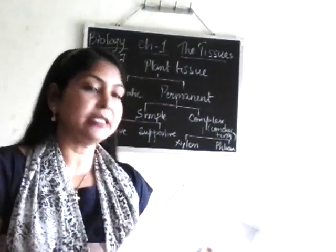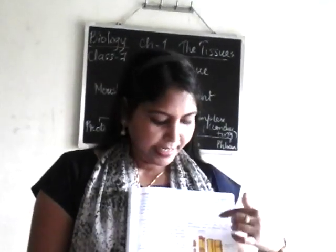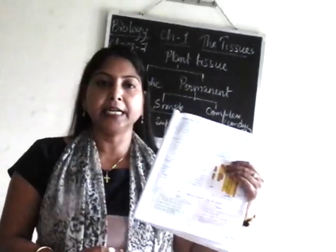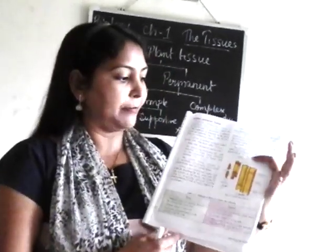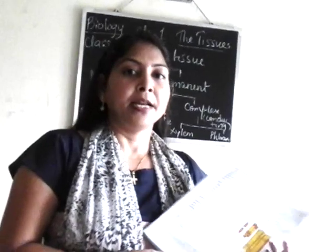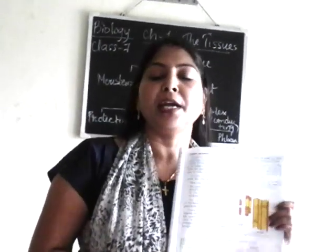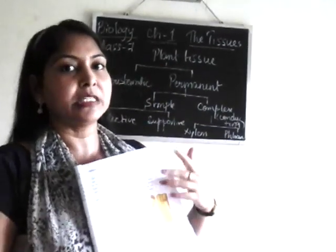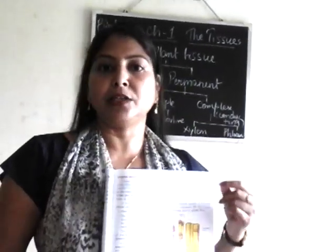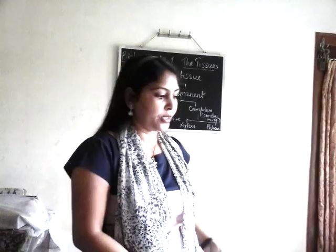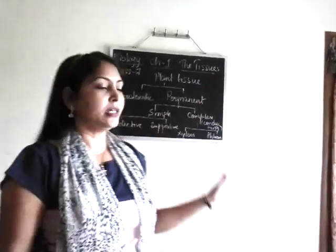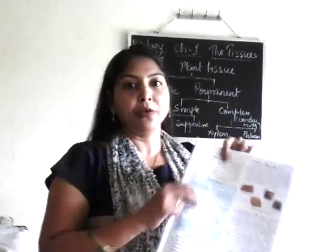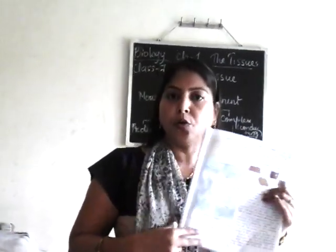You will draw the diagram which is given in your book — from there you can see and draw xylem and phloem. This is the last topic of your plant tissue. Now we will just take a recap of the plant tissue we have learned so far. I am going to show you on the book — I will be sending you this page so that you can draw it in your copy.